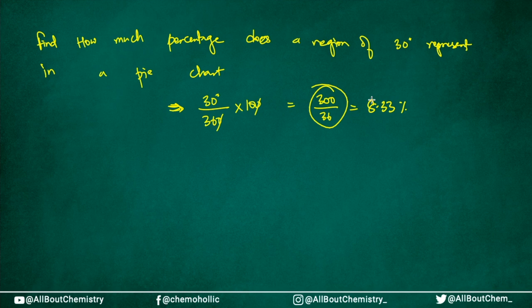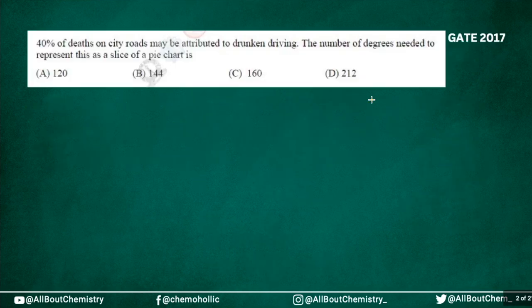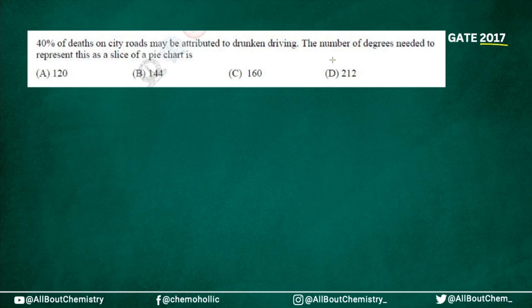This is how the basic things work. Now we will see some questions and solve them. First, we will take a question from a previous year GATE exam. It was asked in GATE 2017. The question says that 40 percent of deaths in a city road may be attributed to drink and driving. The number of degrees needed to represent this slice of a pie chart is — how many degrees do you need?